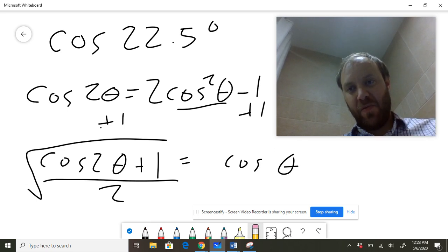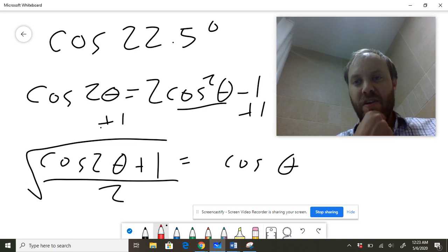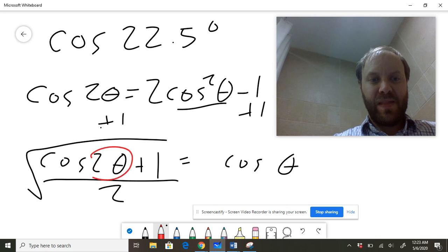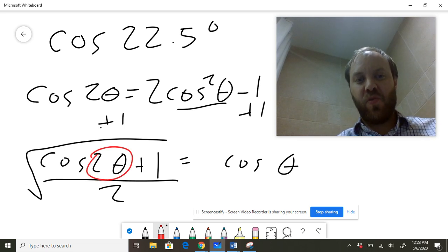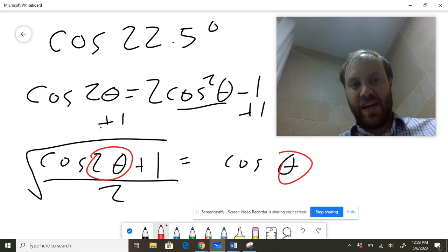Anyway, you look at this and say, well, what's the significance? Here's why this is significant. Notice the two inputs in this formula. This says I'm putting in the cosine of twice an angle, and I get back the cosine of a single angle. This is actually what's referred to as the half-angle identity.